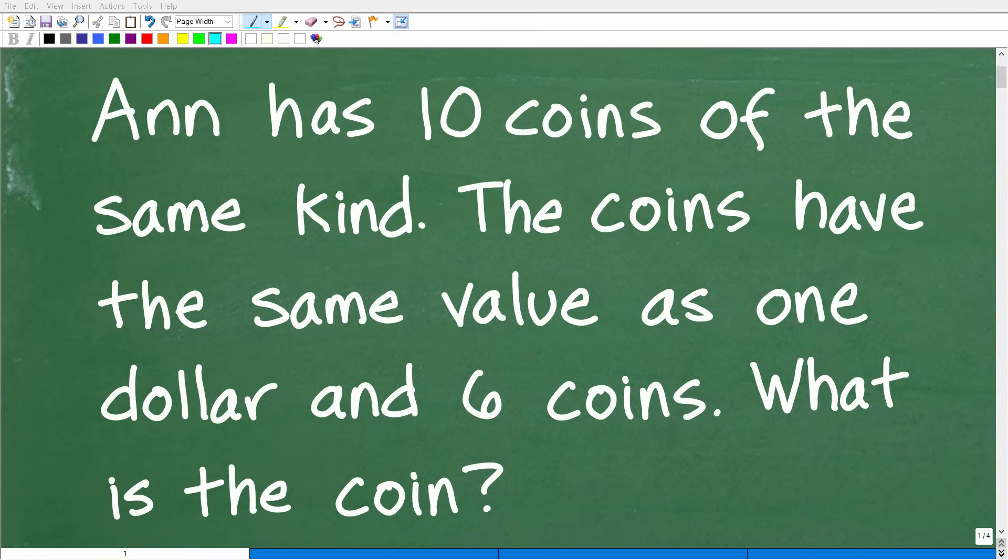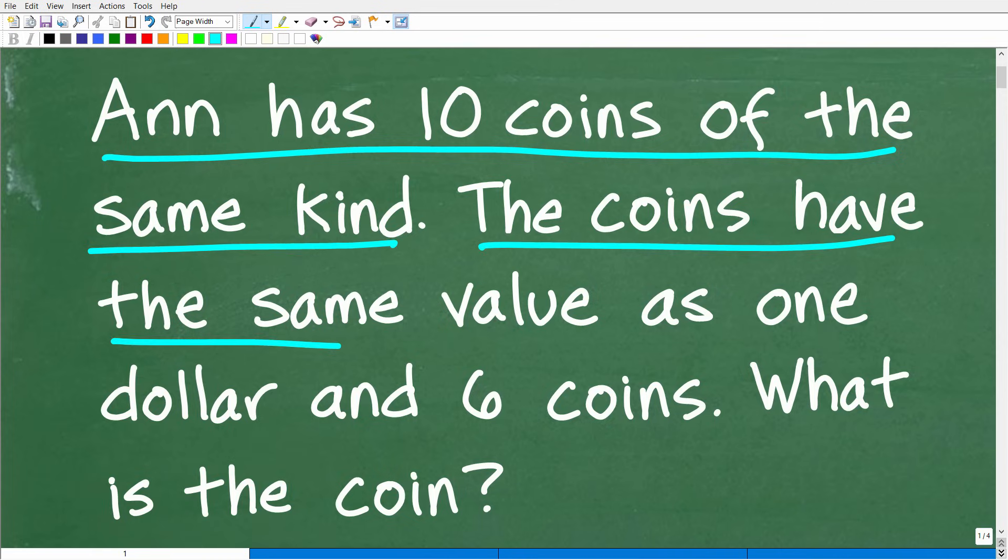Okay, so get ready to put your math skills to work to solve this interesting little math word problem. Let me go ahead and read the problem. Ann has 10 coins of the same kind. The coins have the same value as $1 and 6 coins. What type of coin does Ann have?